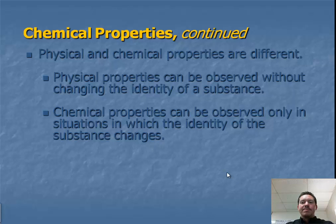But with chemical property, it can only be observed in situations in which the identity of a substance changes. I know from previous experience that paper will burn. But if I were to not know that it burns, I'd have to light that paper on fire to see that it does react the way it does with fire.